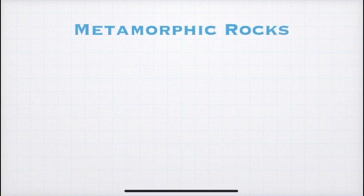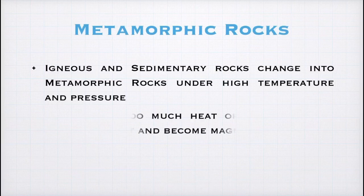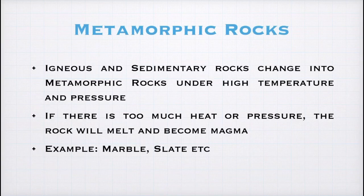Next, we will study about the third type of rocks which are metamorphic rocks. So, igneous and sedimentary rocks become metamorphic rocks if high temperature and pressure is applied on them. But, if the heat or pressure is very high, then they will become magma, that is molten rock. Examples of metamorphic rocks are marble which is formed from limestone and slate which is formed from clay. Now, students, as you have seen that one type of rock can change into another type. This happens in a cyclic manner. We will see how.